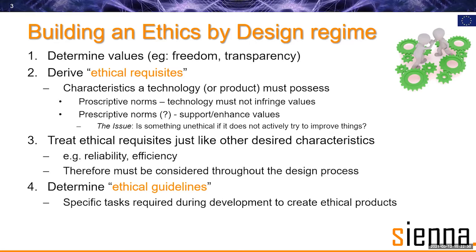What we want technologists to do is take these requisites — these characteristics, sometimes very basic things like 'the technology must not destroy human freedom' — and turn those into exactly the same type of design requirements that they are used to dealing with anyway. All technologies have a design requirement of being reliable; most have a requirement of being efficient. These are things that are an inherent part of the thinking during the creation of the technology. They're not external factors brought in after the fact. We want to make ethics just another characteristic of a desirable technology. An ethical guideline is a task that has to be undertaken during the development of a technology or product in order to create an end result that matches our ethical requisites.